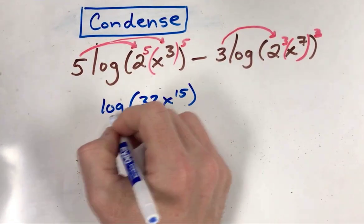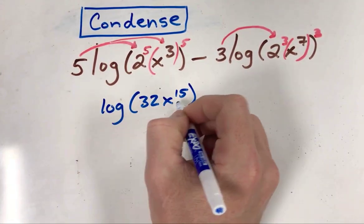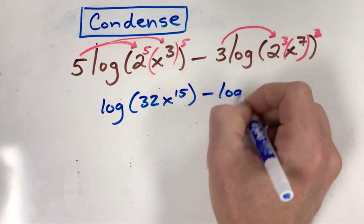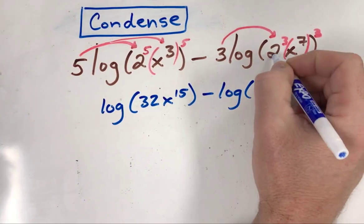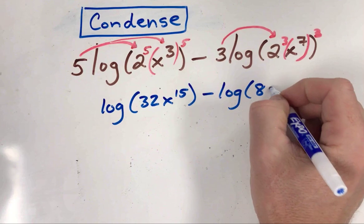This turns into log of thirty-two x to the fifteenth minus log of eight—that's what 2 to the third power gives you—times x to the twenty-one.